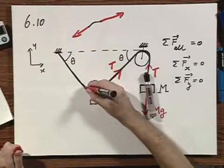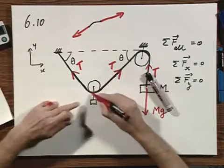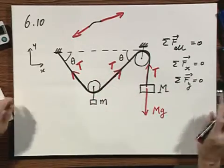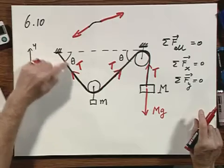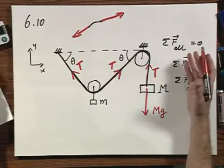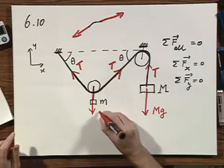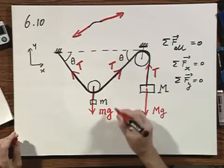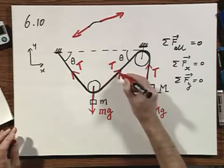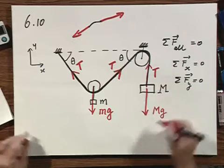So therefore, whenever you deal with a massless string and no friction here and no friction there, the tension along the string is everywhere the same. And so I can also put the tension here because that is important for the force acting on this pulley. And then here I have mg. So on this object there are three forces: these two tensions plus little mg. On this object, the tension plus capital Mg.